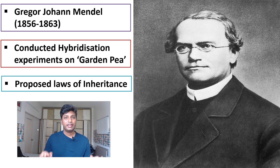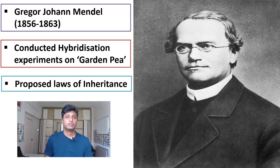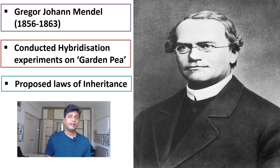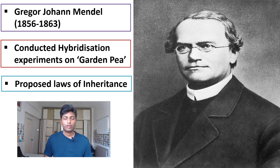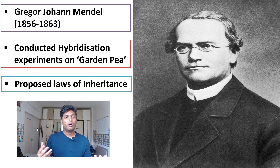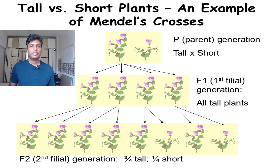Gregor Johan Mendel conducted certain experiments which were famously called the hybridization experiments on the garden pea plant. From these experiments he made certain laws famously known as the Laws of Inheritance, or the Principles of Inheritance. Since we need to know the difference between dominance and recessive, let's understand what exactly Mendel did in his experiment.